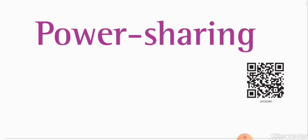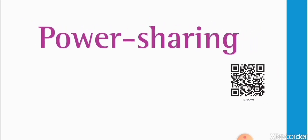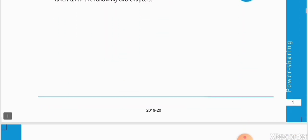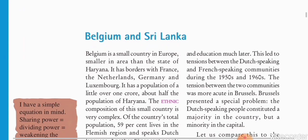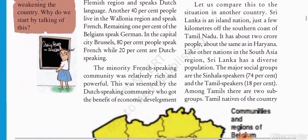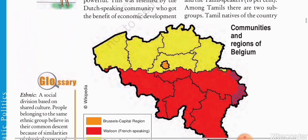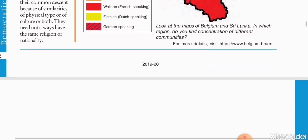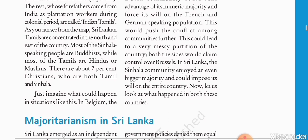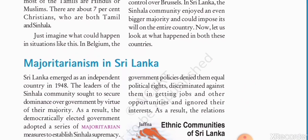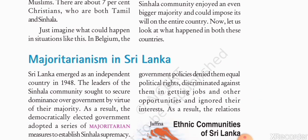In this chapter we will study what is power sharing. We will study the story of Belgium and the story of Sri Lanka, and with the help of these two stories we will try to understand what happens when power is shared between different communities and what happens when power is not shared.